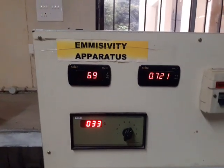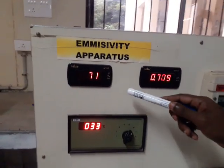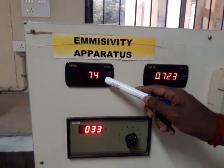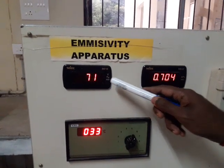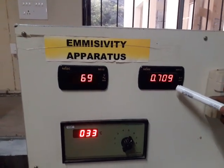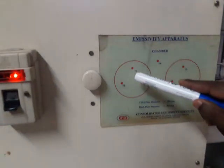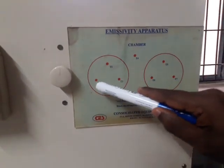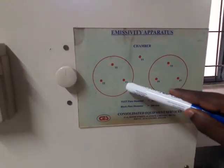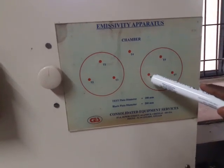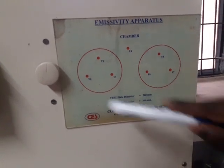Once the setup has reached steady state, you have to note down the voltage, the corresponding ampere, and the temperatures T1, T2, T3, T4, T5, T6, and T7.